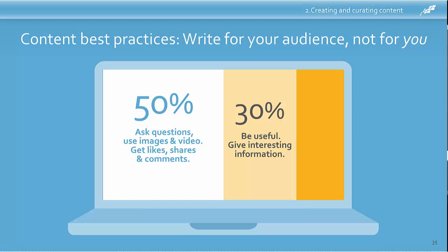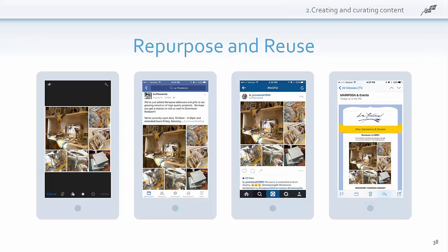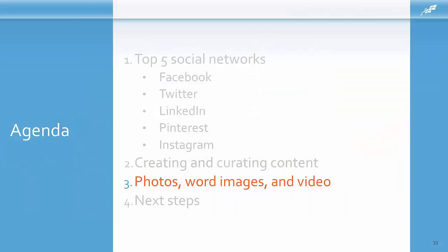You don't need to create brand new content for every social network or curate different content for each one. Here's an example: La Provence in Rockport, Massachusetts, repurposed visual content by taking great photos of products from a new line in their store and making a photo collage. They then shared the image on Facebook with a product announcement and store hours reminder, on Instagram with a cute caption, and in an email that also announced the line and an upcoming community event. You could do the same thing — take content your audience will find interesting and share it across whatever social networks you use.